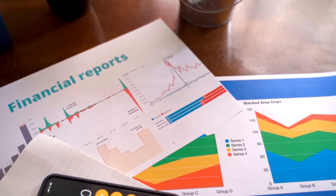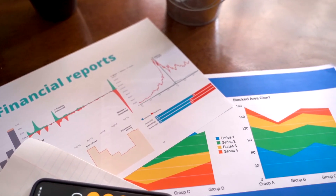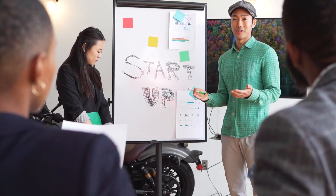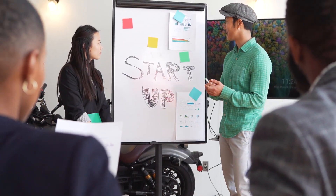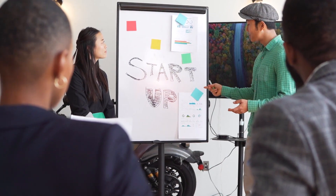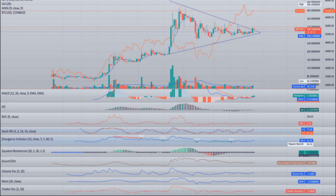Quant price prediction 2022: The price of Quant is predicted to reach a minimum level of $420.55 in 2022. The Quant price can reach a maximum level of $522.81 with an average price of $435.69 throughout 2022.